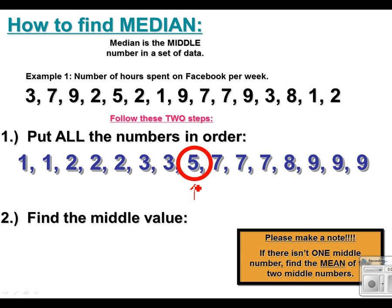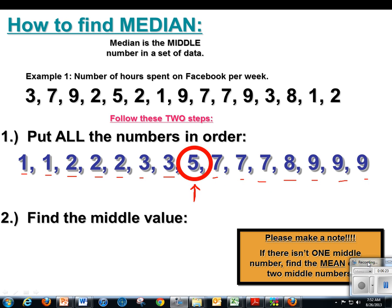Don't confuse that with the mean being five — just because the mean was five doesn't mean the median is five. They might be close to each other but they won't always be the same. Let me double-check: there are seven values to the left and seven values to the right. So there's your median — the median is five.